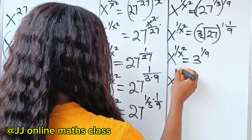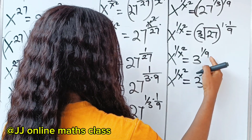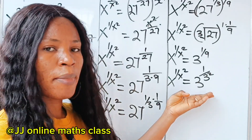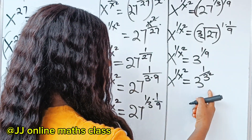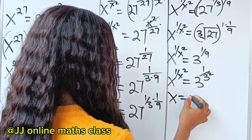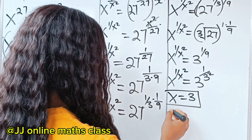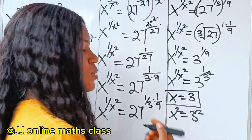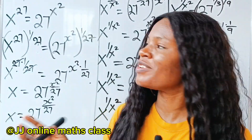So we have x to the power of 1 over x squared is equal to 3 raised to the power of 1 over 9. Now 9 is the same thing as 3 squared, so it's time to compare. If we compare, we can see that our x is equal to 3 and our x squared is equal to 3 squared. So if we say x is equal to 3, then we have gotten the value of our x. By comparison, our x is also equal to 3.